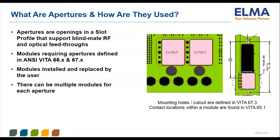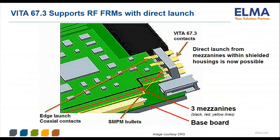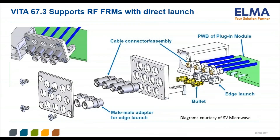In this example of the Vita 67.3 implementation, it can be seen that the Vita 67.3 RF module supports edge launch SMPM contacts off of three mezzanine levels. The spacing of these mezzanines will be specific to a given daughter card design. Vita 67.3 allows custom configurations of contacts to support such designs.